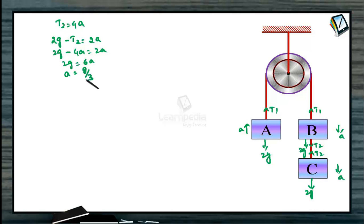A is equal to g by 3. This is the acceleration for body A, B and C. As we know the acceleration of all the bodies are same.